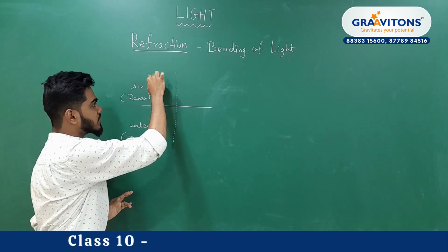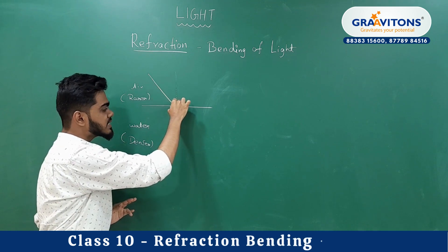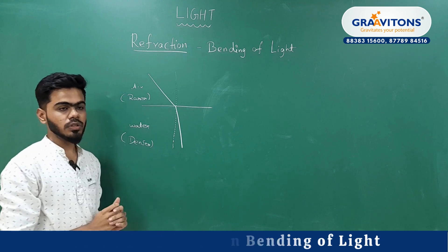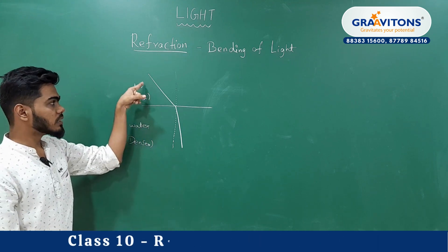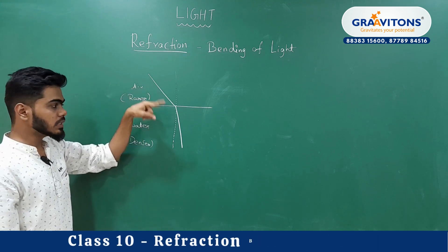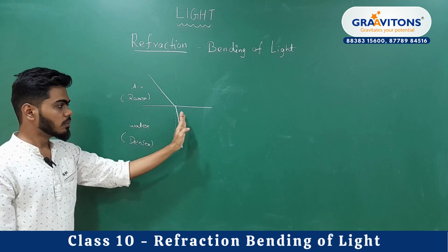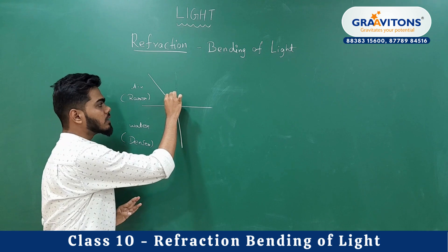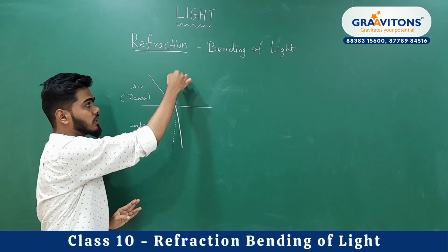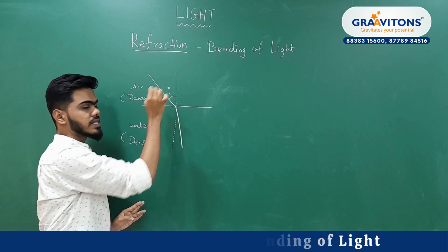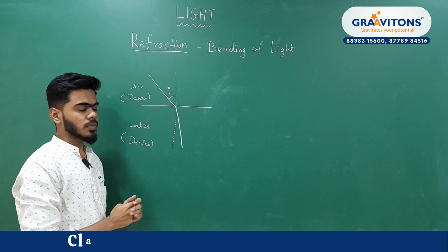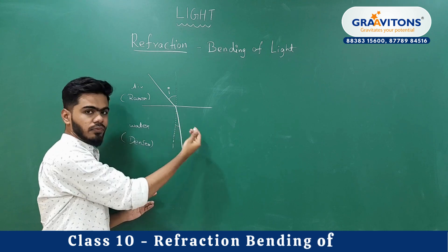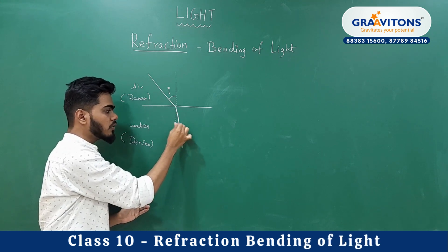When light travels from a rare medium into a denser medium, it is bent towards the normal. Always remember: rare to denser medium, light bends toward the normal. The angle between the incident ray and the normal is called the angle of incidence, and the angle between the normal and the refracted ray is called the angle of refraction.